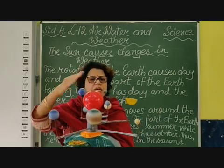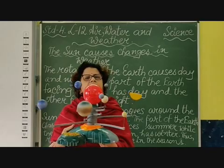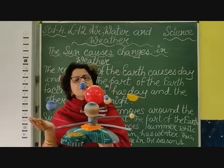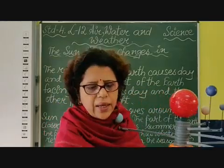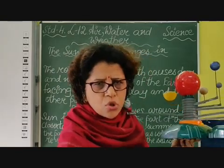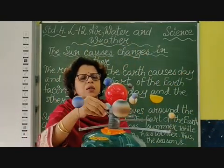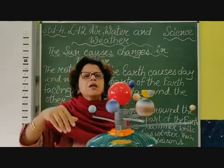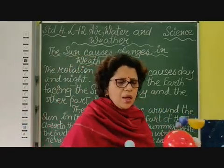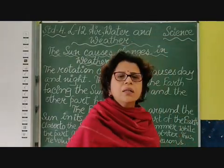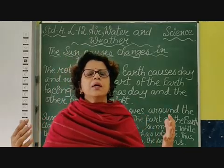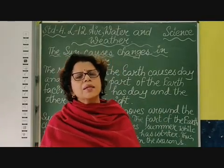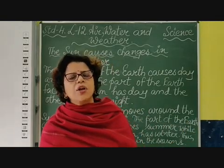The part which is facing the sun will be having summer, and the part which is away from the sun will have winter. Because the earth is tilted — as we have discussed, earth is not straight, it is tilted on its axis, as you have seen in this globe. So the part facing towards the sun will have summer, and the part away from the sun will have winter. In this way we have different seasons. And when the whole earth is getting equal rays of the sun, we call it equinox — that is during spring and autumn, when it is neither very hot nor very cold.